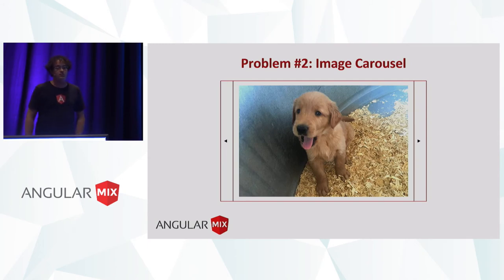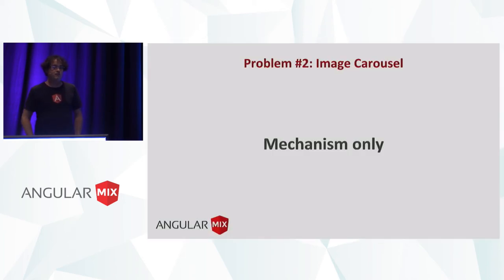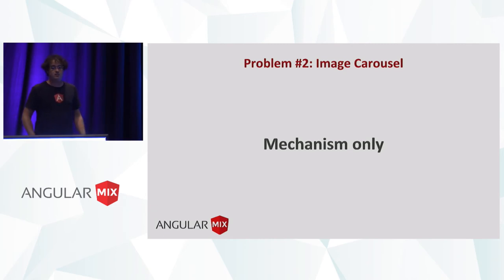The second thing we're going to tackle is designing an image carousel. In particular, we want to design a directive that implements the logic of a carousel while leaving the UI up to the user — we only want to encode the mechanism of the carousel. Let them figure out how they want to display images, how they want to react to next or previous events, et cetera.